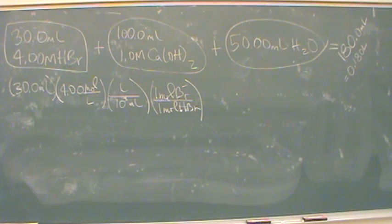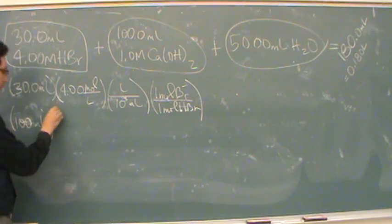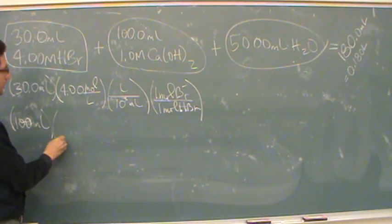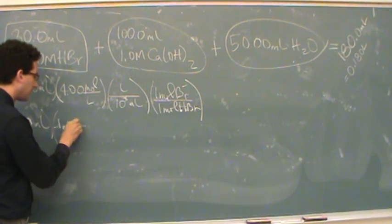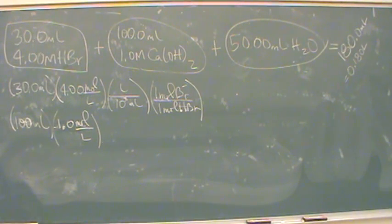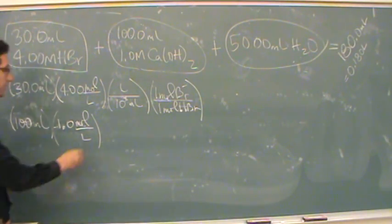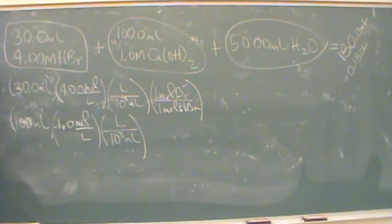I'm going to do the exact same thing now for calcium. There's 100 milliliters, and that's in the second solution. Then there's 1.0 moles per liter of calcium hydroxide. I again have to convert a liter on top to 10 cubed milliliters on the bottom. We'll get rid of all the volume units, and now I'm left with moles of calcium hydroxide.